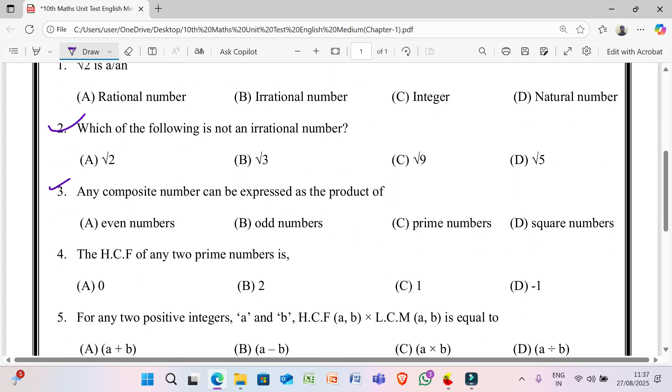3rd question: any composite number can be expressed as the product of A) even numbers, B) odd numbers, C) prime numbers, D) square numbers